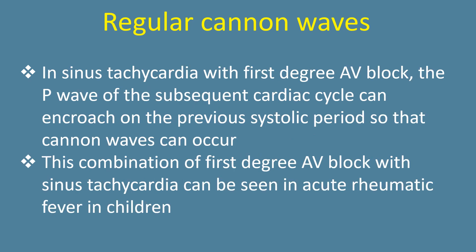In sinus tachycardia with first-degree AV block, the P wave of the subsequent cardiac cycle can encroach on the previous systolic period, so that cannon waves can occur. This combination of first-degree AV block with sinus tachycardia can be seen in acute rheumatic fever in children.